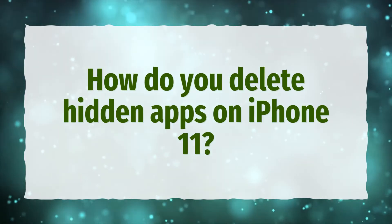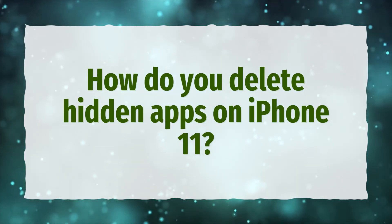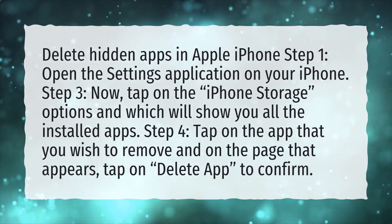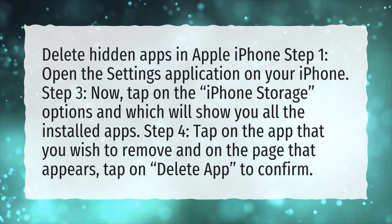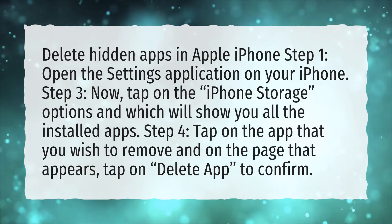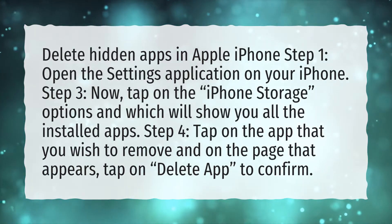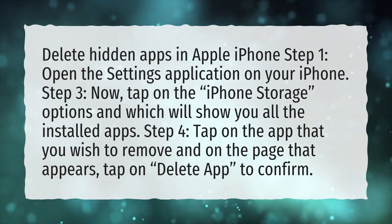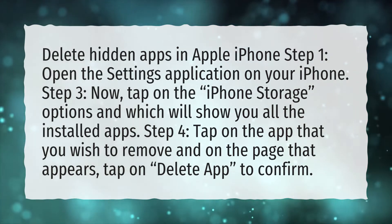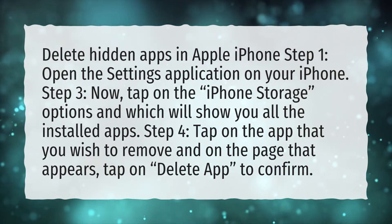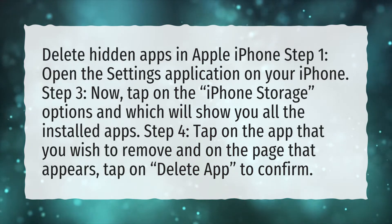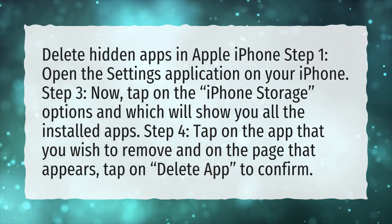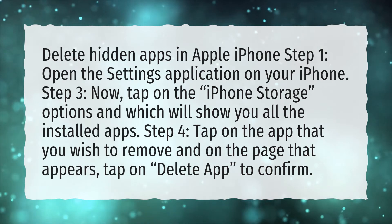How do you delete hidden apps on iPhone 11? Delete hidden apps in Apple iPhone. Step 1: Open the Settings application on your iPhone. Now tap on the iPhone Storage option, which will show you all the installed apps. Tap on the app that you wish to remove and on the page that appears, tap Delete App to confirm.